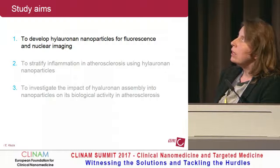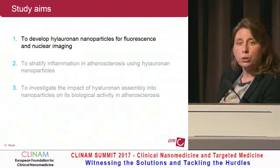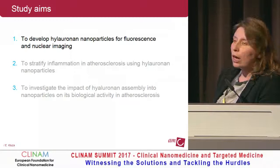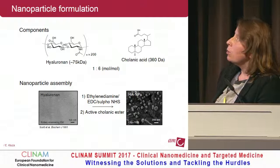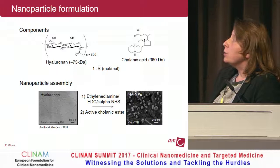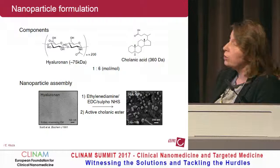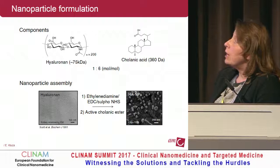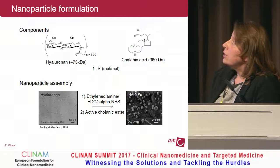This brings me to the first study aim: working out a formulation based on hyaluronan as the backbone for imaging purposes. The formulation is rather simple — two main components: hyaluronan and a small hydrophobic molecule, cholic acid. We first modify hyaluronan by introducing primary amine groups to the carboxyl groups, then conjugate an activated cholic ester (NHS ester), and this triggers the assembly of nanoparticles.